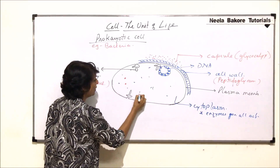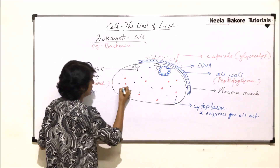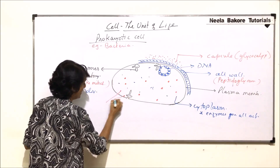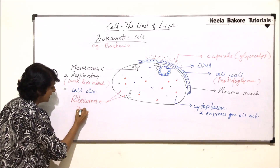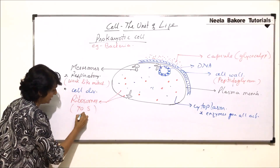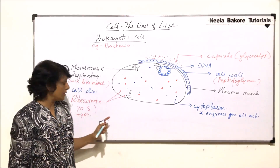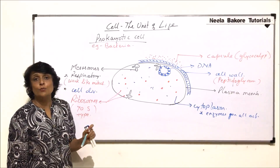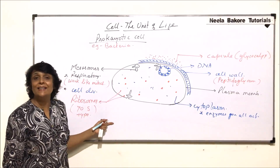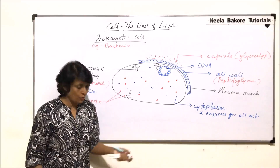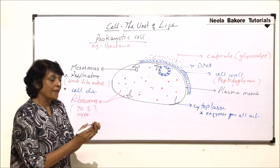There is no membrane-bound structure; the only structure found is the ribosome. These granular structures are the ribosomes, and the ribosomes present are 70S — meaning the Svedberg coefficient of these ribosomes is 70S. In eukaryotic cells, the ribosomes present are called 80S type.